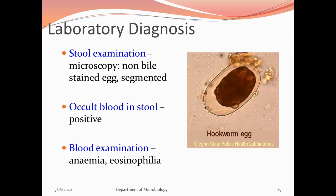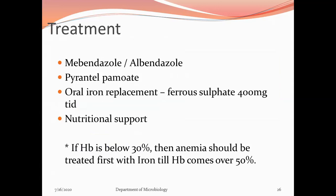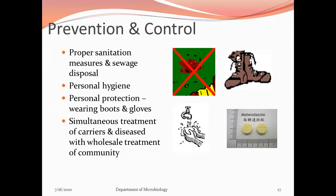Laboratory diagnosis: demonstration of eggs in stool showing non-bile-stained, colorless, segmented eggs with four blastomeres. Occult blood in stool is positive. Blood examination shows anemia. Treatment: mebendazole or albendazole, oral iron replacement with ferrous sulfate 400 mg, nutritional support. Prevention: proper sanitation, sewage disposal, personal hygiene, wearing boots and gloves, simultaneous treatment of carriers and diseased individuals with whole-community treatment.